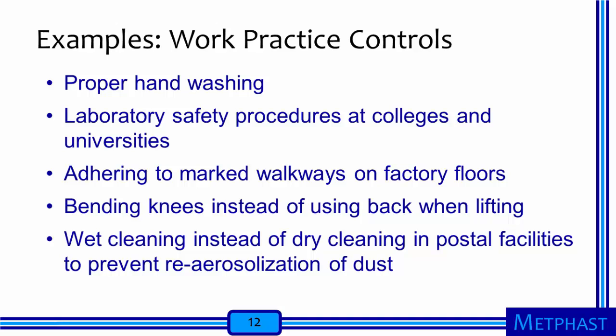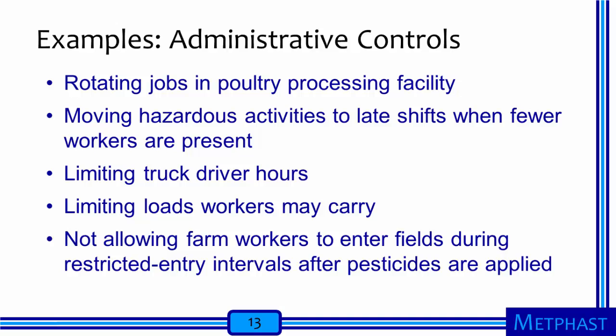The wet cleaning example has been an emphasis since 2001, when anthrax spores passed through the postal system and worker exposure risk was thought to have been increased by the use of pressurized air jets to clean dust from sorting machines. Examples of administrative controls include rotating jobs at a poultry processing facility to minimize ergonomic risks, moving hazardous activities to late shifts when fewer workers are present, limits on truck driver hours to ensure they are rested, limiting loads that workers are allowed to carry, and not allowing agricultural workers to enter fields during restricted entry intervals after pesticides are applied.